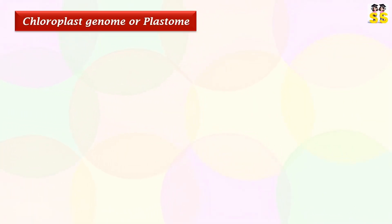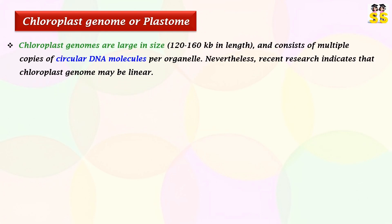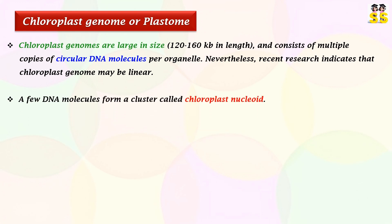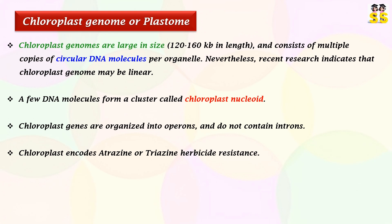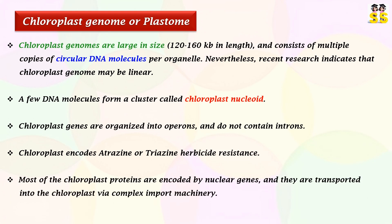Chloroplast genome, or plastome. Chloroplast genomes are larger, ranging from 120 to 160 kb in length. Multiple copies of circular DNA molecules are found in each organelle; however, recent research indicates that the genome of chloroplast may be linear. The region where DNA molecules form a cluster is called the chloroplast nucleoid. Chloroplast genes are organized into operons and do not contain introns. Chloroplast encodes atrazine or triazine herbicide resistance. Most chloroplast proteins are encoded by nuclear genes and are moved into the chloroplast by a complex import machinery.